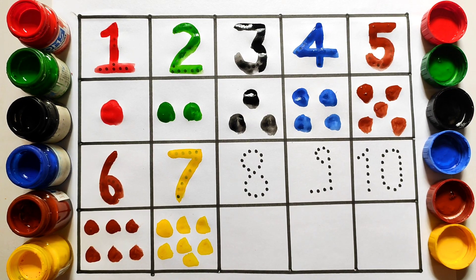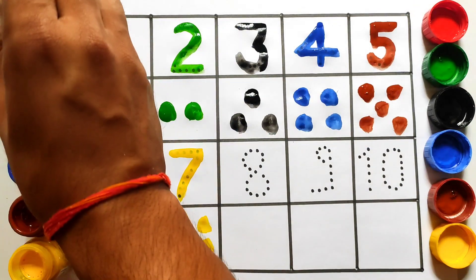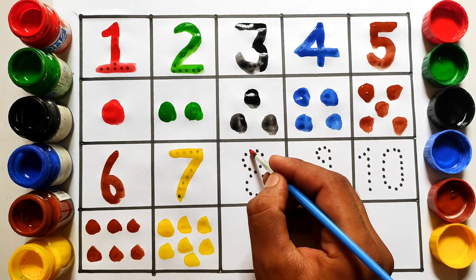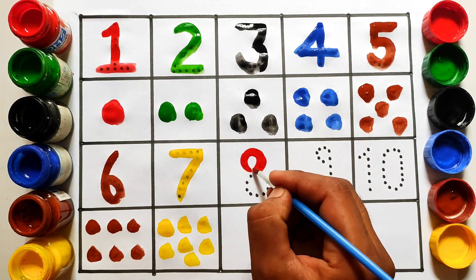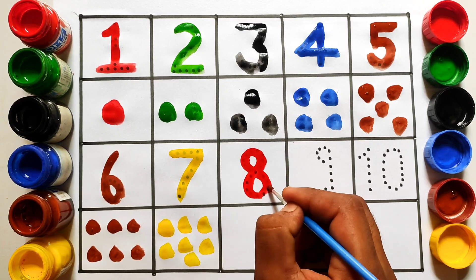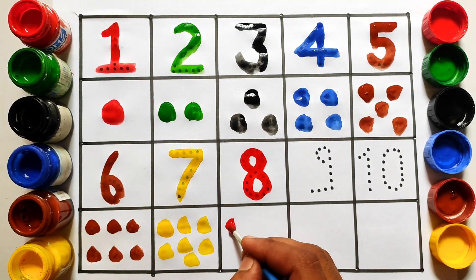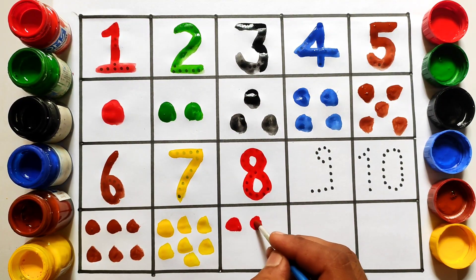S-e-v-e-n, seven. Eight, e-i-g-h-t, eight: one, two, three, four, five, six, seven.